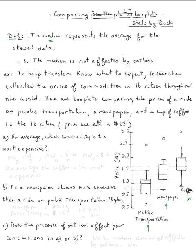So the median for the public transportation is right there, is one. So median for public transportation is equal one dollar. The median for the newspaper, let me try to approximate it. I think it's 1.4. So median for newspaper is 1.4 dollars.